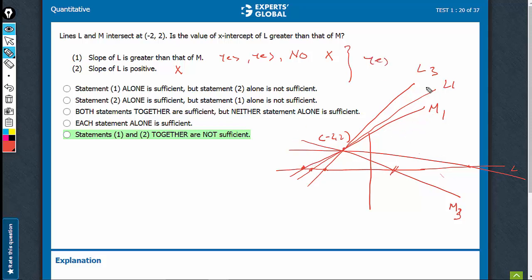And in this case, we just discussed, in this case of L3 versus M3, slope of L is positive. Slope of L is greater than M, but still, we have this condition. Intercept of M is greater than intercept of L.